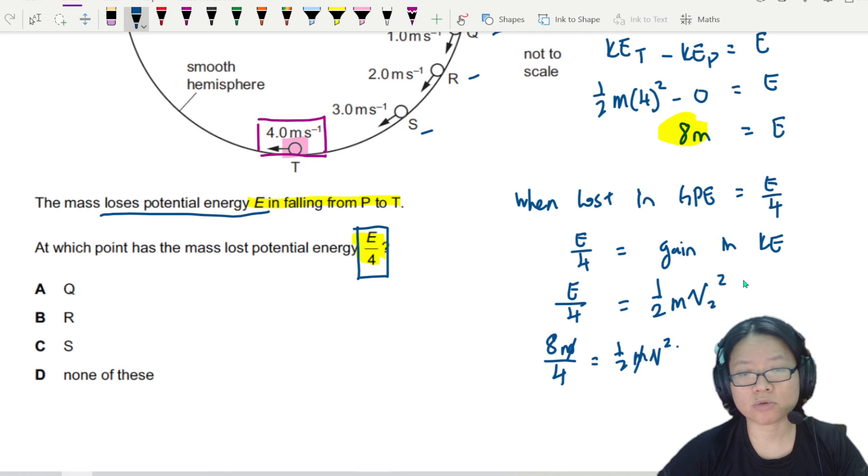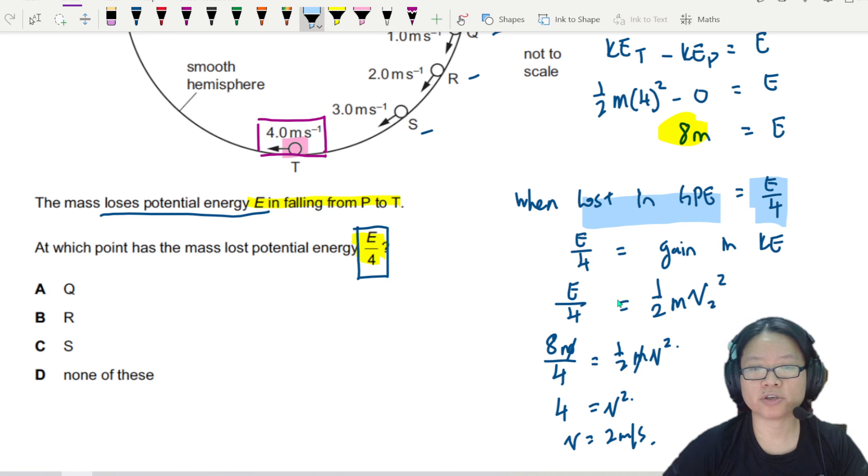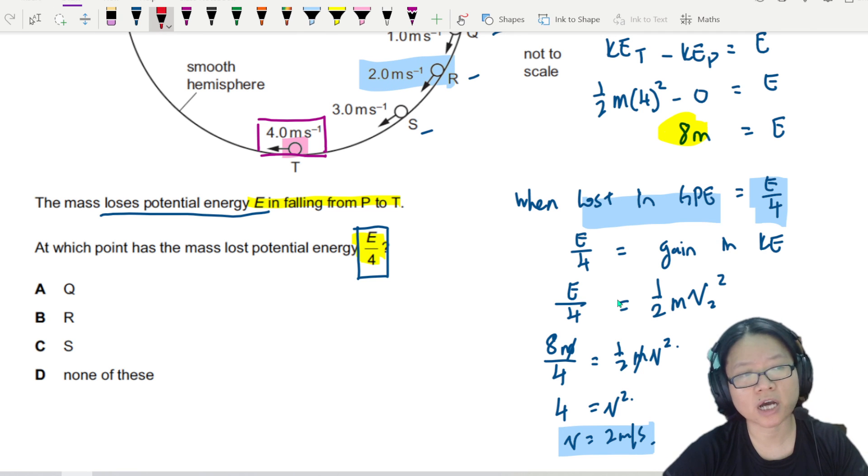And you have 16 over 4 is V squared. So from here, 16 over 4 is 4. 4 is equal to V squared. V is equal to 2 meter per second. So this means when there is a loss in GPE of E over 4, your V is 2 meter per second. Your answer would be R.